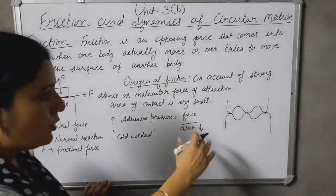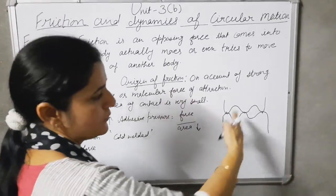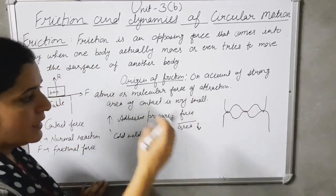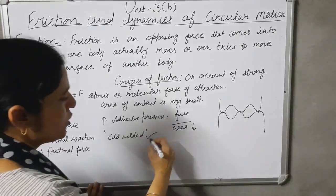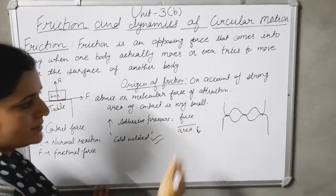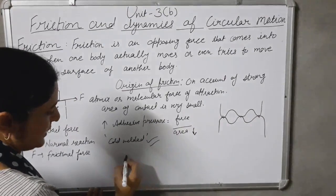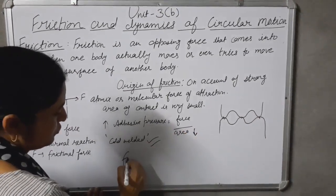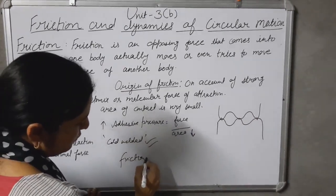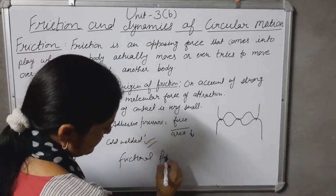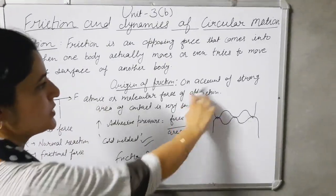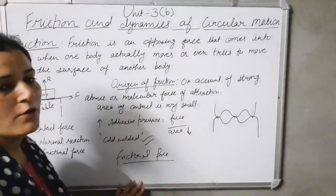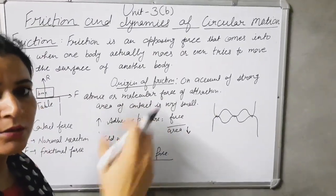When one body tries to move over the surface of another body, it involves the rupturing of thousands of these cold welds. This gives rise to the frictional force. It means frictional force arises due to the strong intermolecular forces of attraction between the two surfaces.